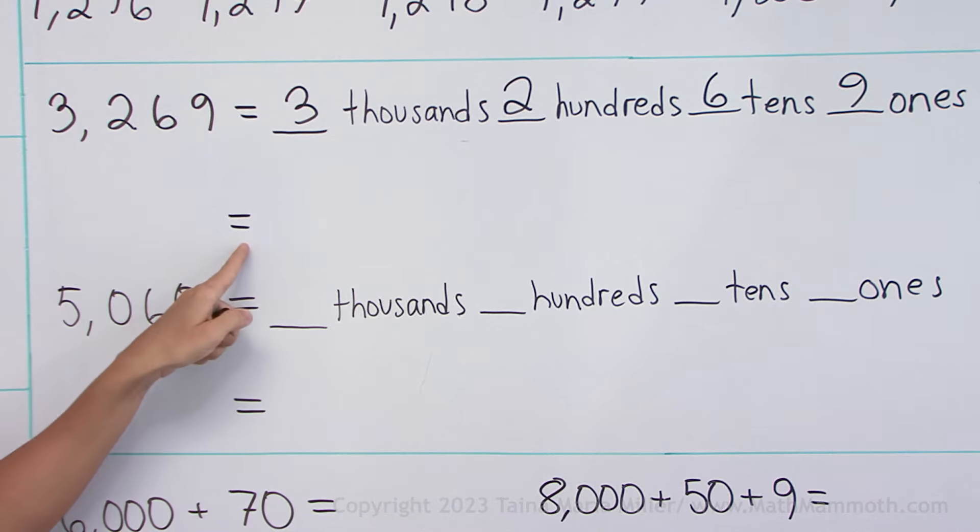That's the easy part. Now, we're going to write it as a sum of its different place values.